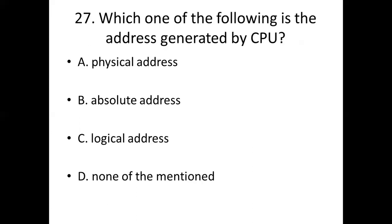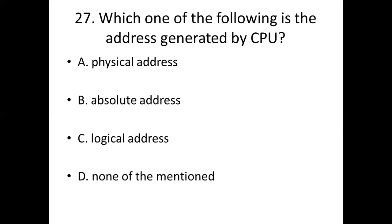Twenty-seventh bit. Which one of the following is the address generated by CPU? Option A: Physical address. Option B: Absolute address. Option C: Logical address. Option D: None of the mentioned. Answer: Option C, Logical address.